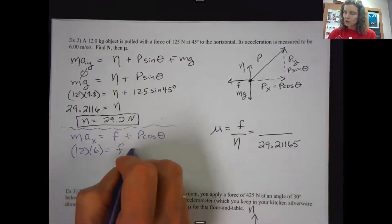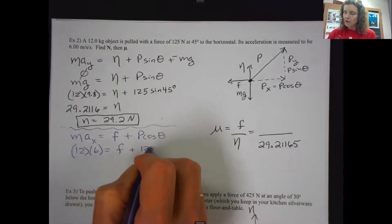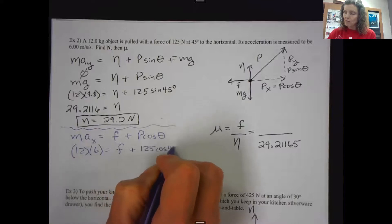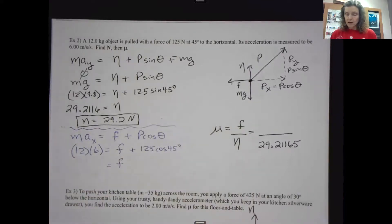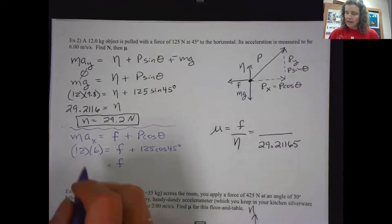There's my unknown friction. The pull is 125. This time times the cosine of 45 degrees. So solving for friction, please do that if you haven't done it yet. And I have negative 16 on my calculator, negative 16.388, et cetera.